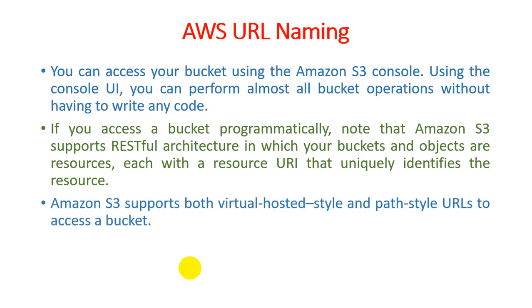To access any cloud service through a URL, there are two different options. Amazon S3 supports both the virtual-hosted-style and the path-style URLs to access a bucket. So Amazon S3 has two types or two different methods to access services. The first method is virtual-hosted-style and the second method is path-style.